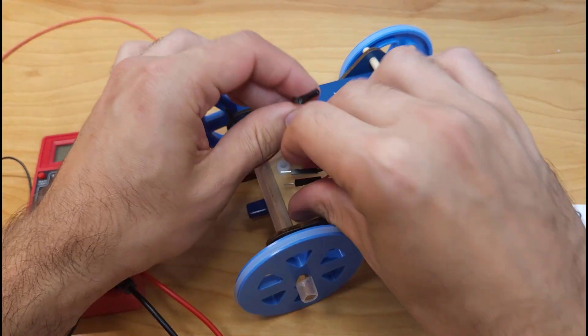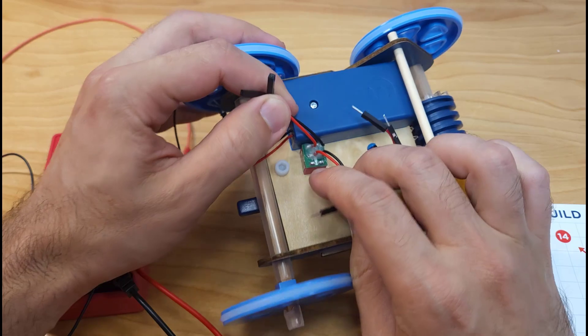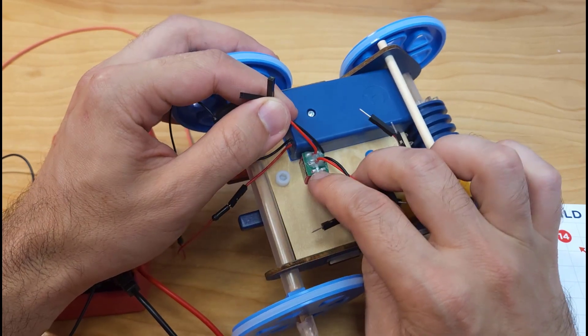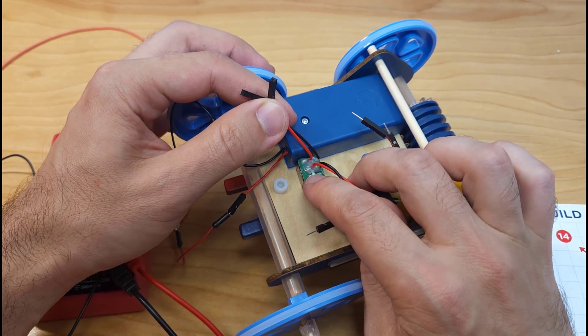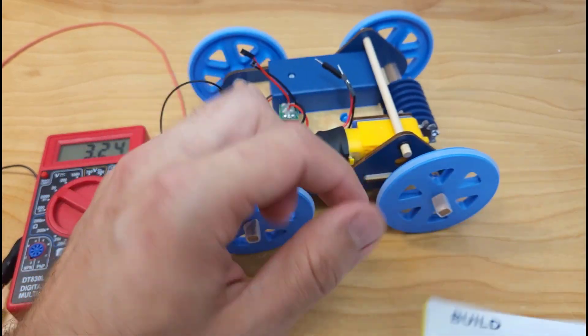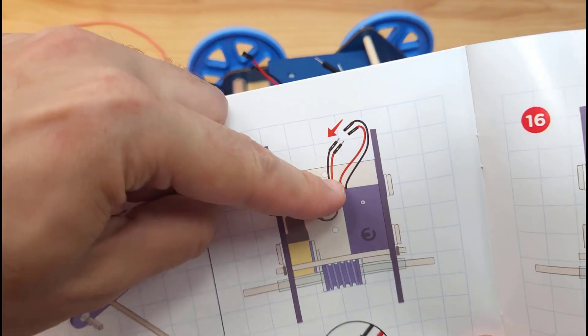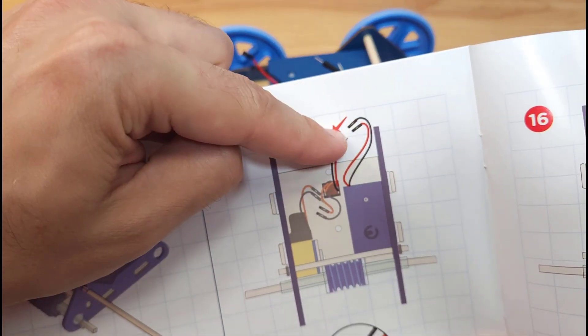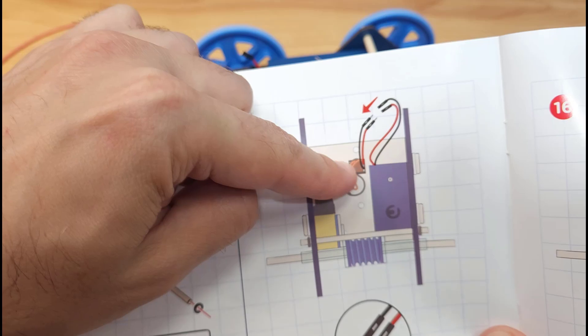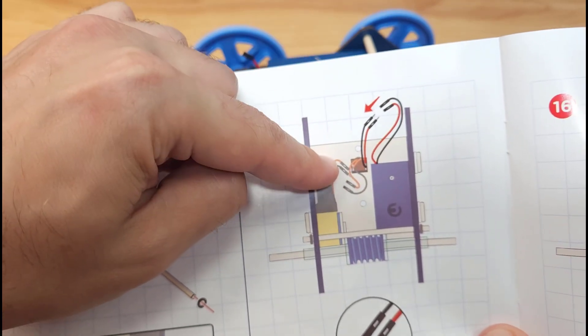So the issue, I believe, I don't know if it was faulty out of the box or if my daughter broke it somehow during assembly, but I believe this switch is no longer working. So if we look at the wiring diagram they provide for the switch, you've got two wires from the battery pack that go to two wires on one side of the switch, and then the two wires on the other side of the switch go to the motor.